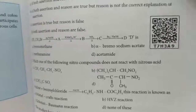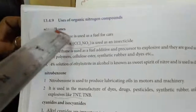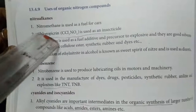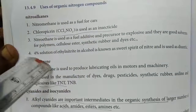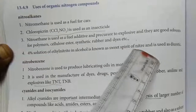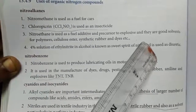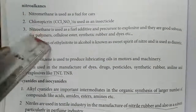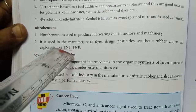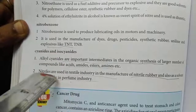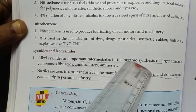Uses of organic nitrogen compounds: nitroalkanes and isothiocyanide are used as insecticides. A four-percent solution of ethyl nitrite in alcohol is a sweet-smelling compound. Isocyanides are very, very important intermediates in organic synthesis and in the nitrile and textile industries.